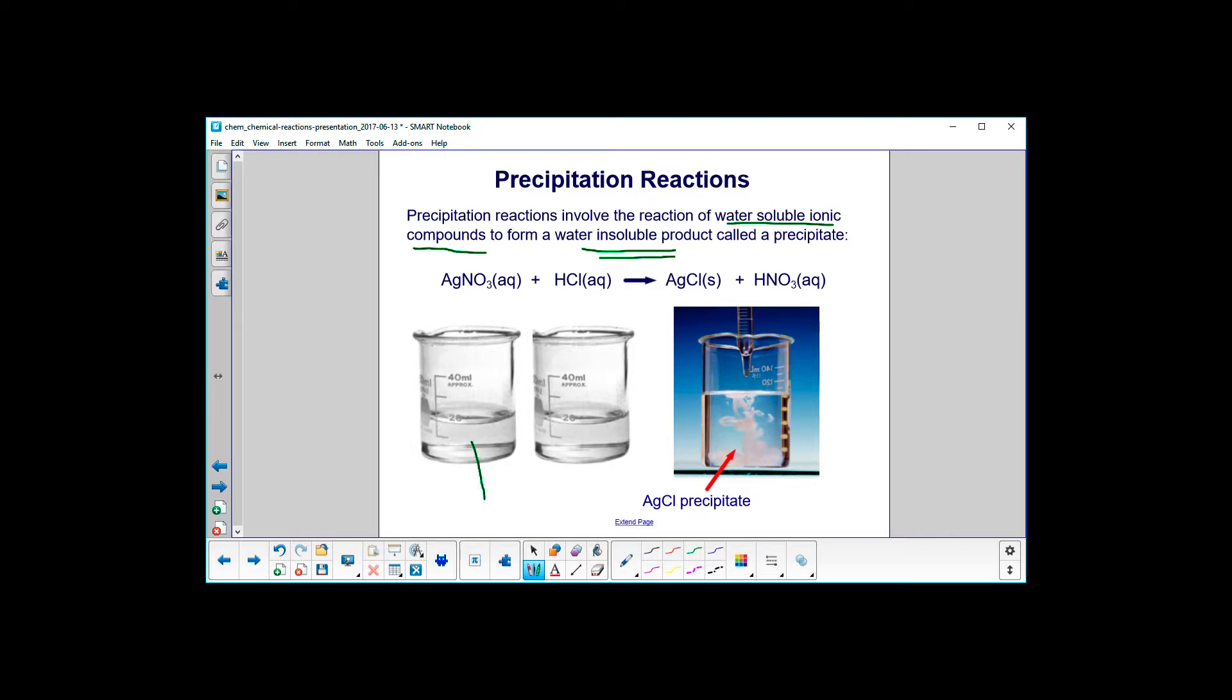So here's an example. Over here we have an aqueous solution, silver nitrate. Here we have hydrochloric acid. If it were not in solution like this, it would just be called hydrogen chloride. But it is an aqueous solution, so it's hydrochloric acid. You can see they are both liquids.